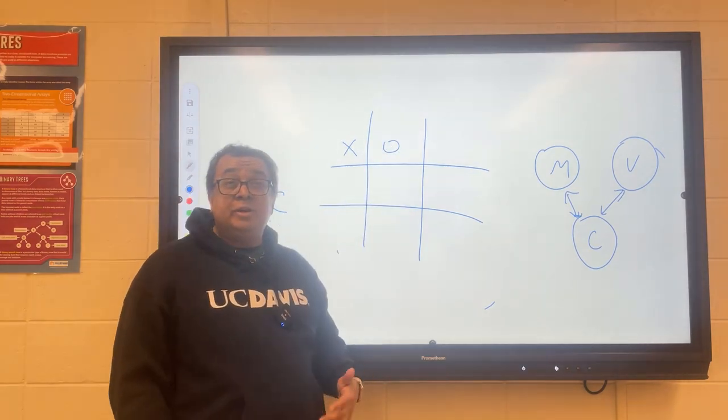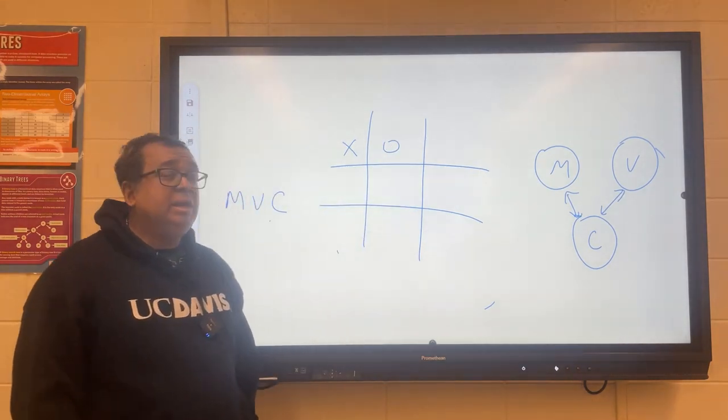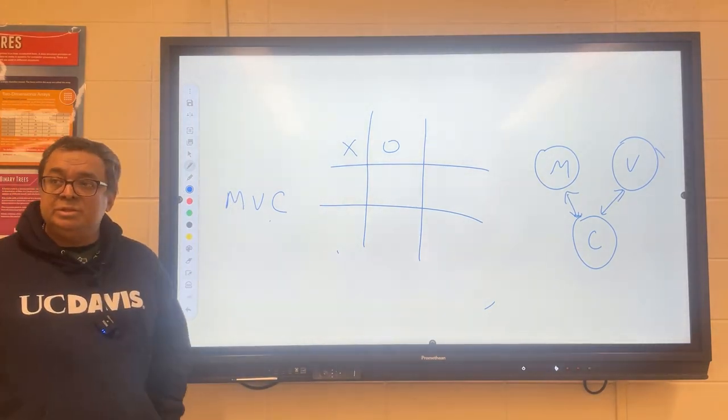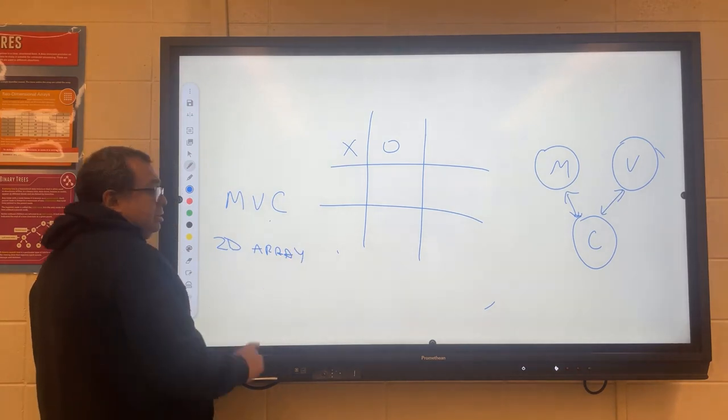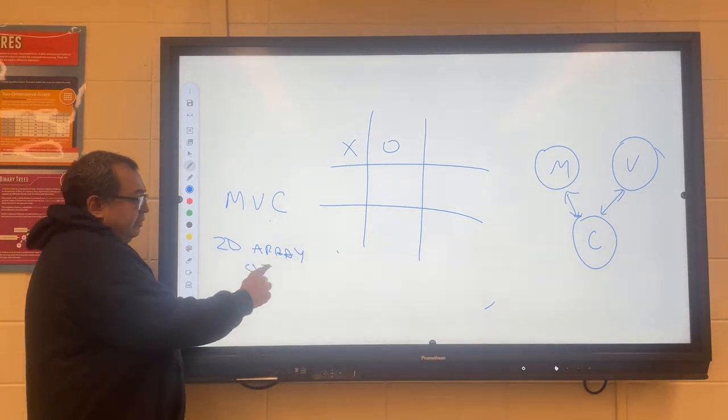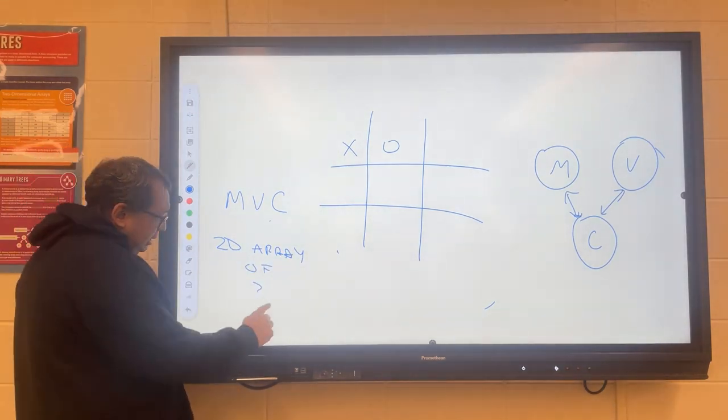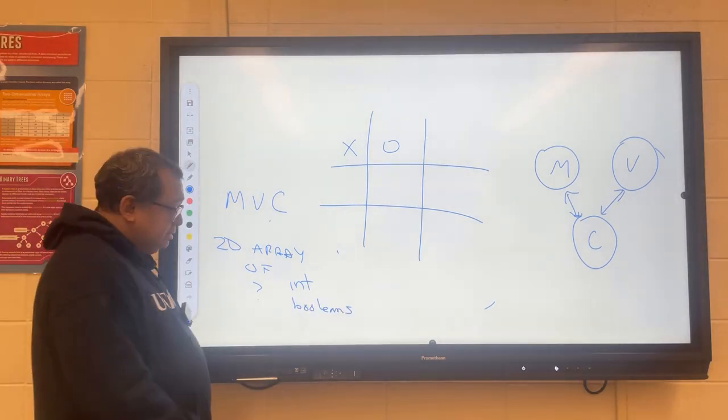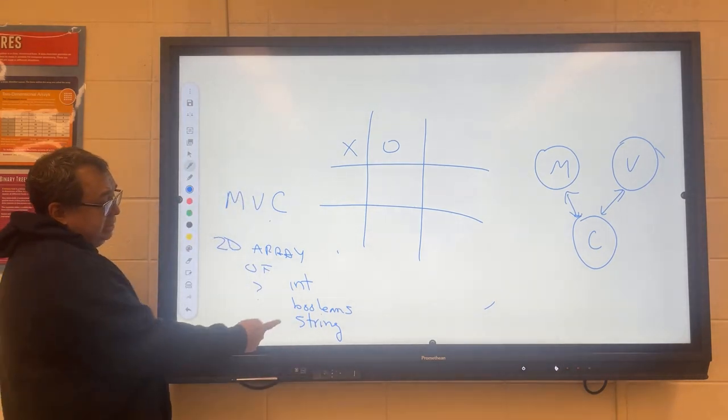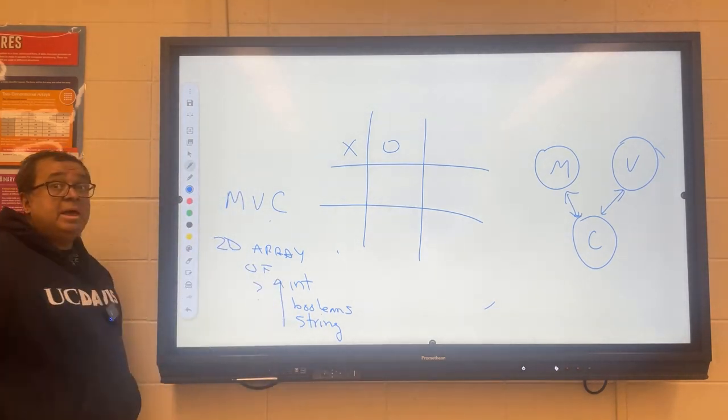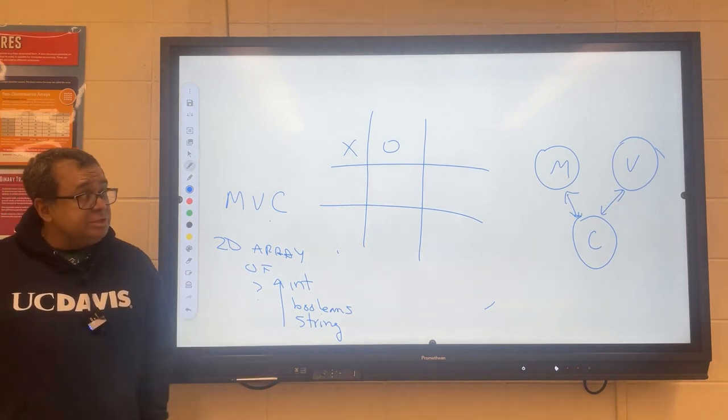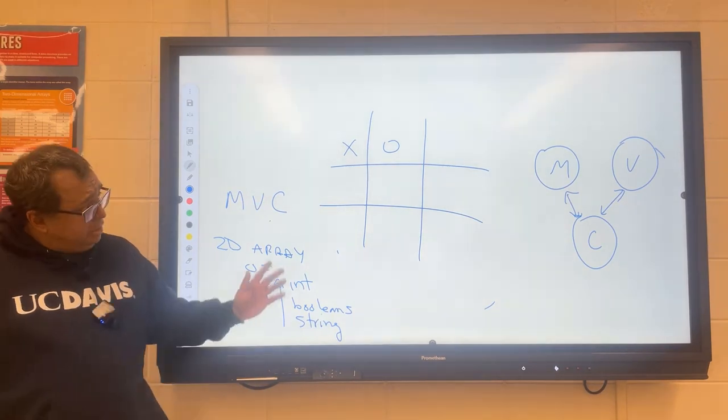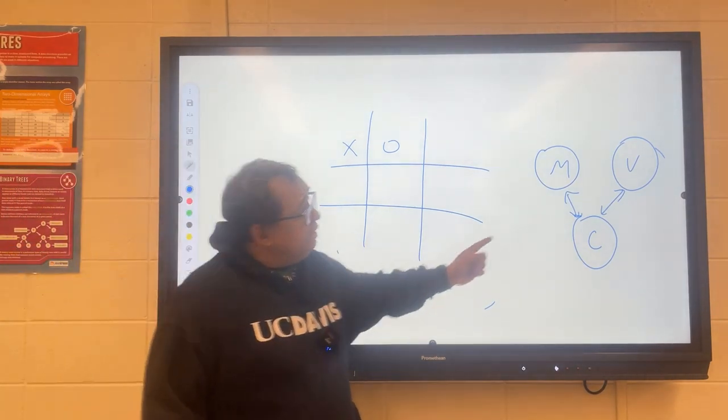Your first thought when we build the model: what should we build here? What's your first thought? A 2D array. And now the magic question: a 2D array of what? That's a possibility. Any other ideas?